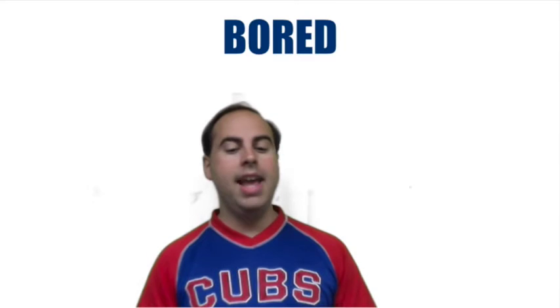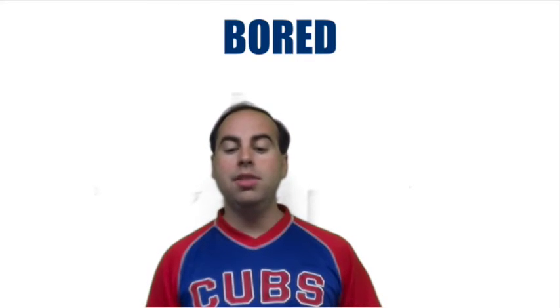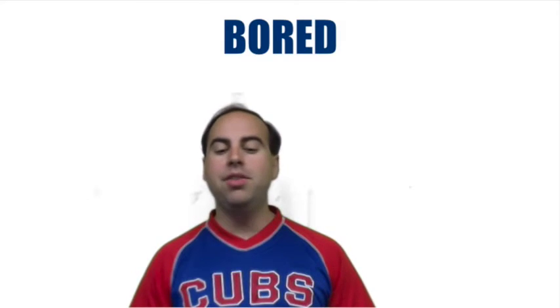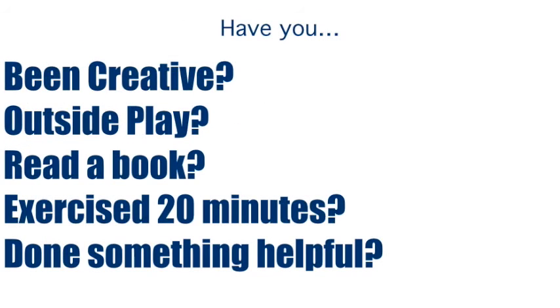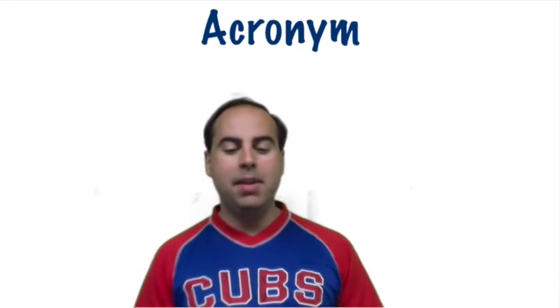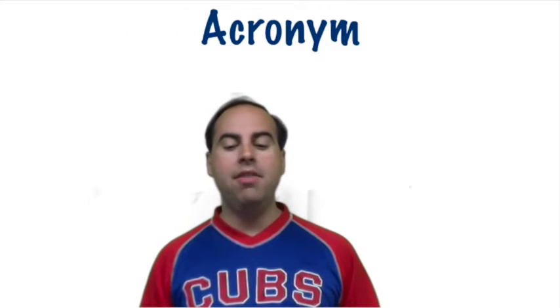This family made up a simple whiteboard using BOARD as an acronym, and their family had to find a new way to use the BOARD board — yes, I said it — the BOARD board, as a way to avoid suburban boredom. The first message was spelled out: H — Have you, B — Been creative, O — Outside and play, R — Read a book, E — Exercise for 20 minutes, D — Done something useful.